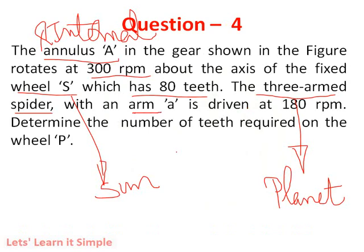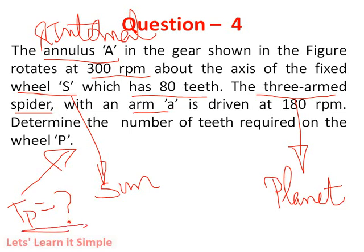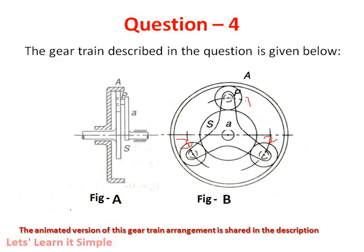Now we have an arm whose direction of rotation is given as 180 RPM. The question is we need to find the number of teeth on the planet P. So simultaneously look at both the views — figure A and B — so that you will have a clear understanding about the arrangement of this type of sun and planet gears.